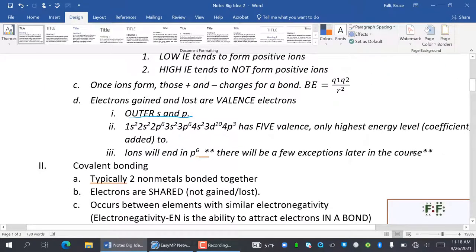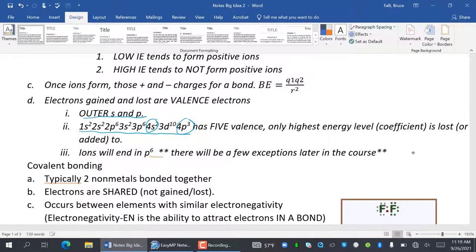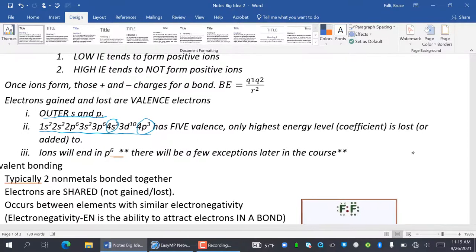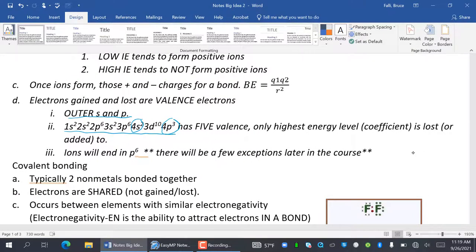So for example, if I have this electron configuration, 1s2, 2s2, 2p6, it has five valence electrons. Only the 4s and 4p count as valence electrons. Only the highest energy level, which is a coefficient, is lost or added to. Ions will end in P6. So this one would become a 4p6. And then something that would be like 5s1 might turn into ending up as 4p6.